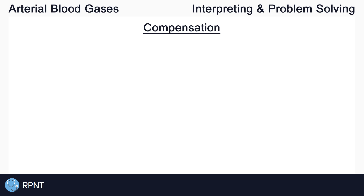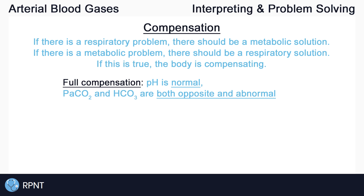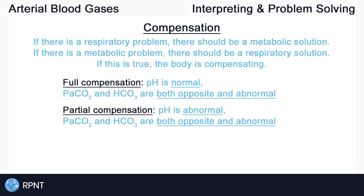Now let's talk about what happens if the body is experiencing an abnormal pH and what the body does to fix this issue. If the body is experiencing metabolic acidosis or alkalosis, or respiratory acidosis or alkalosis, the body should attempt to compensate by inducing the opposite condition. For example, if a person is experiencing respiratory acidosis, their body should attempt to induce metabolic alkalosis to compensate in an attempt to even out the pH. If the pH is kept within normal limits but PaCO2 and HCO3 are both out of range and opposing each other, then we call this full compensation. If the pH is not kept within normal limits but PaCO2 and HCO3 are still out of range and opposing each other, then we call this partial compensation, because one system is trying to compensate for the other.